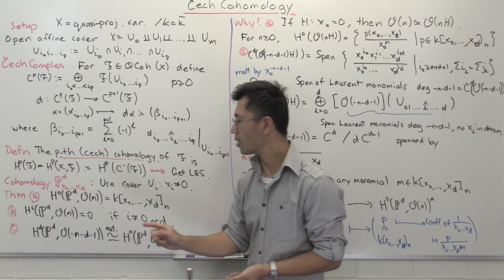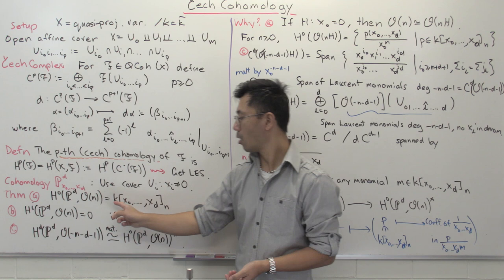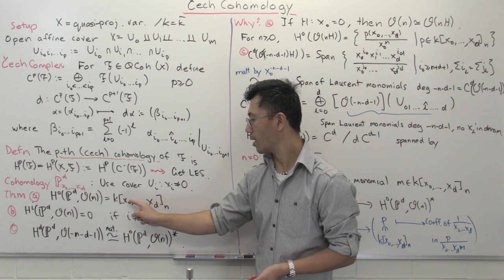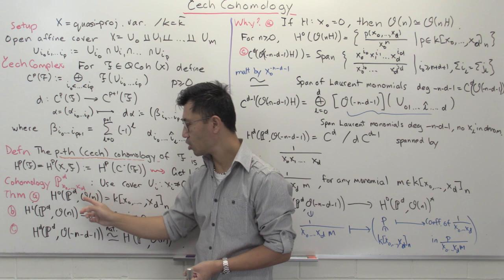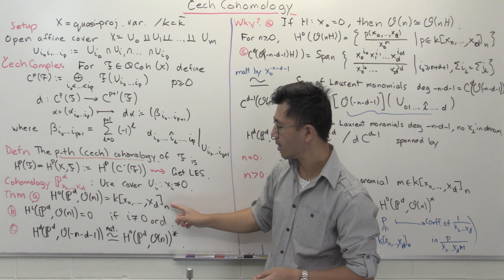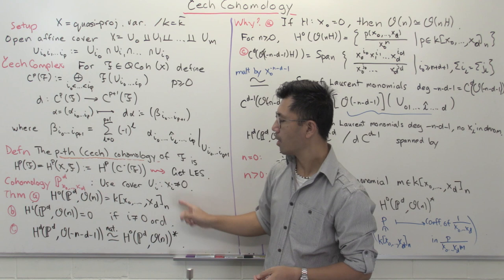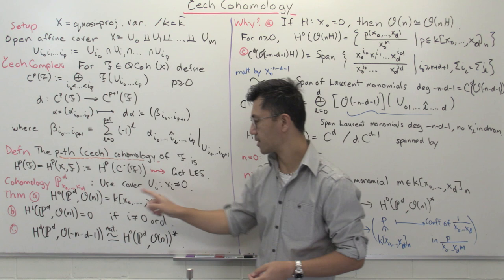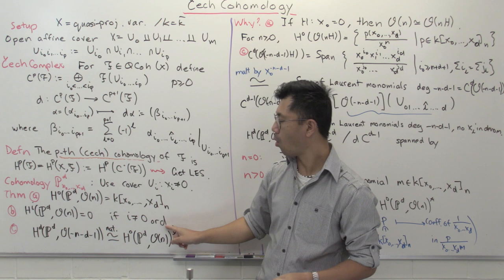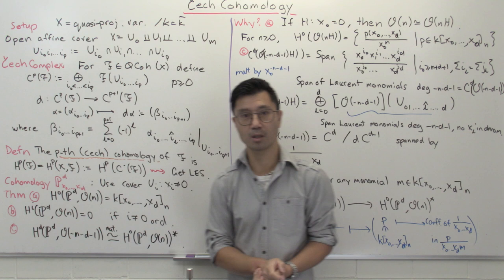This is a complete analogy to what we see in the case of ℙ¹. In particular, if n is negative, H⁰ will be zero. When n = 0 you get k, a one-dimensional space. When n = 1 you get a d+1-dimensional space spanned by x₀ up to xd, and so forth. For the other cohomology groups, if i is such that it's neither 0 nor d — the dimension of projective space — then Hⁱ(O(n)) = 0. When high cohomology vanishes, that gives exactness results on H⁰, which is one reason we study cohomology.